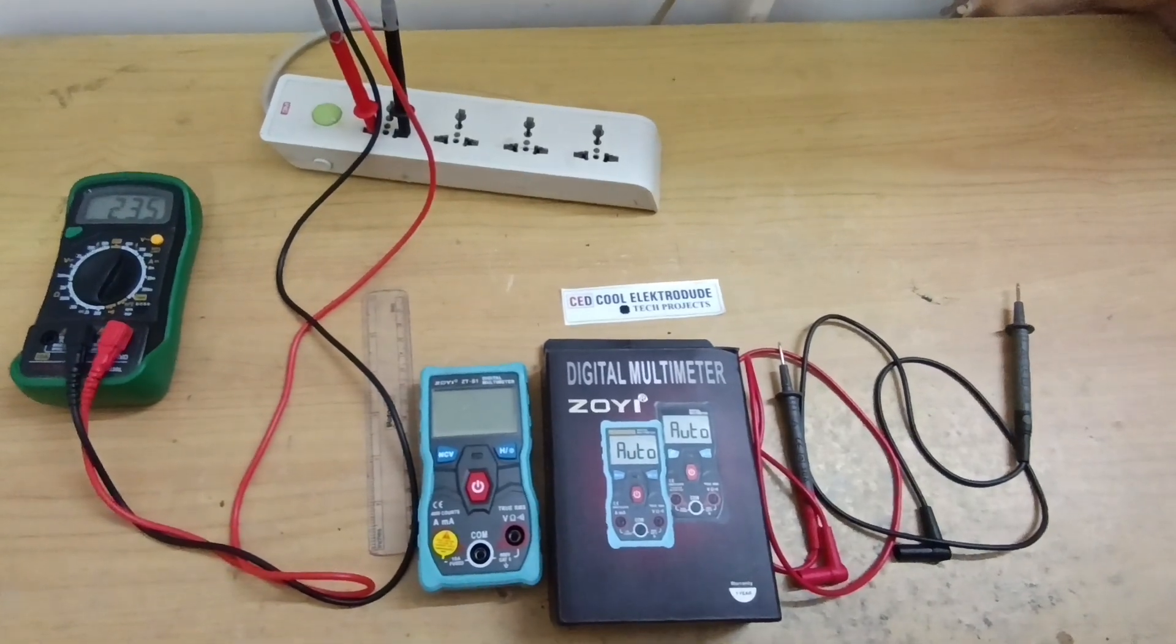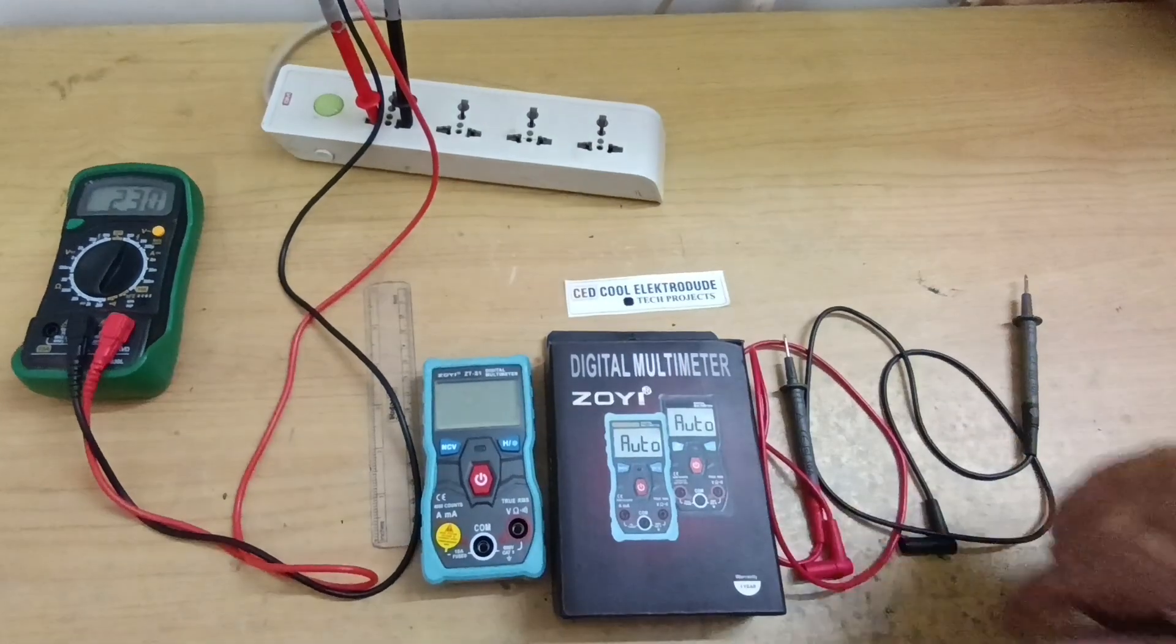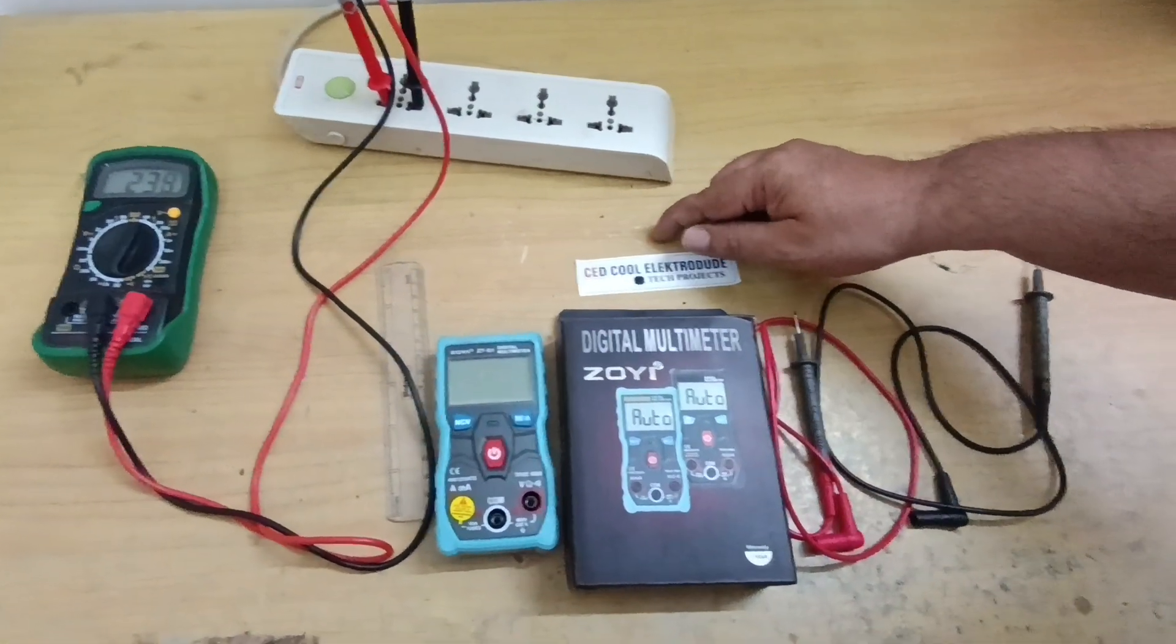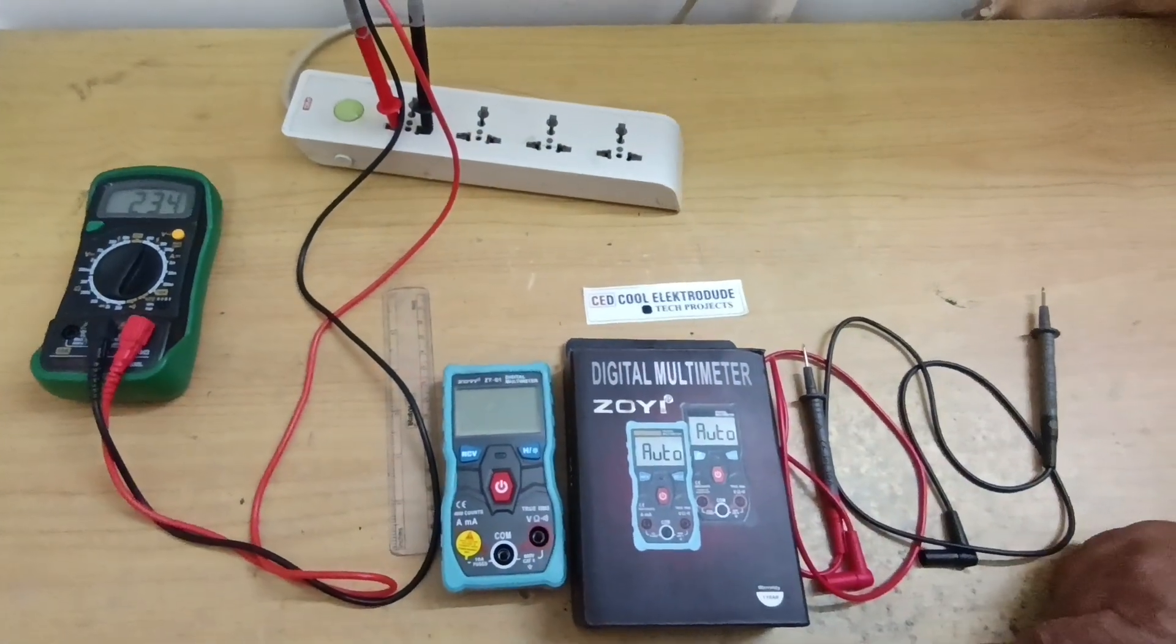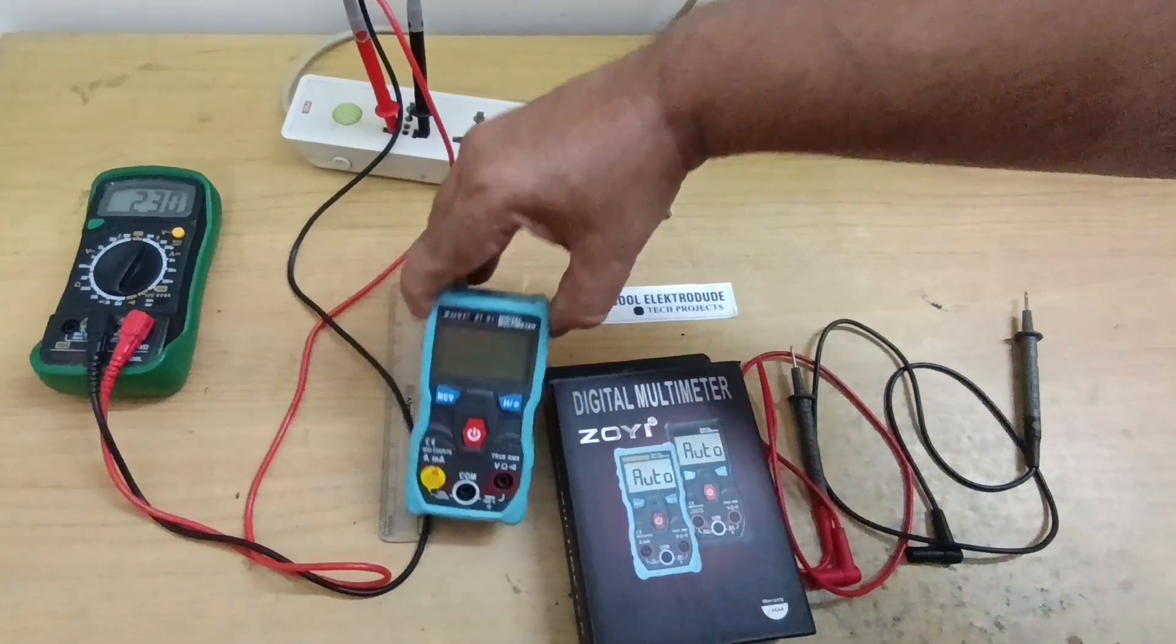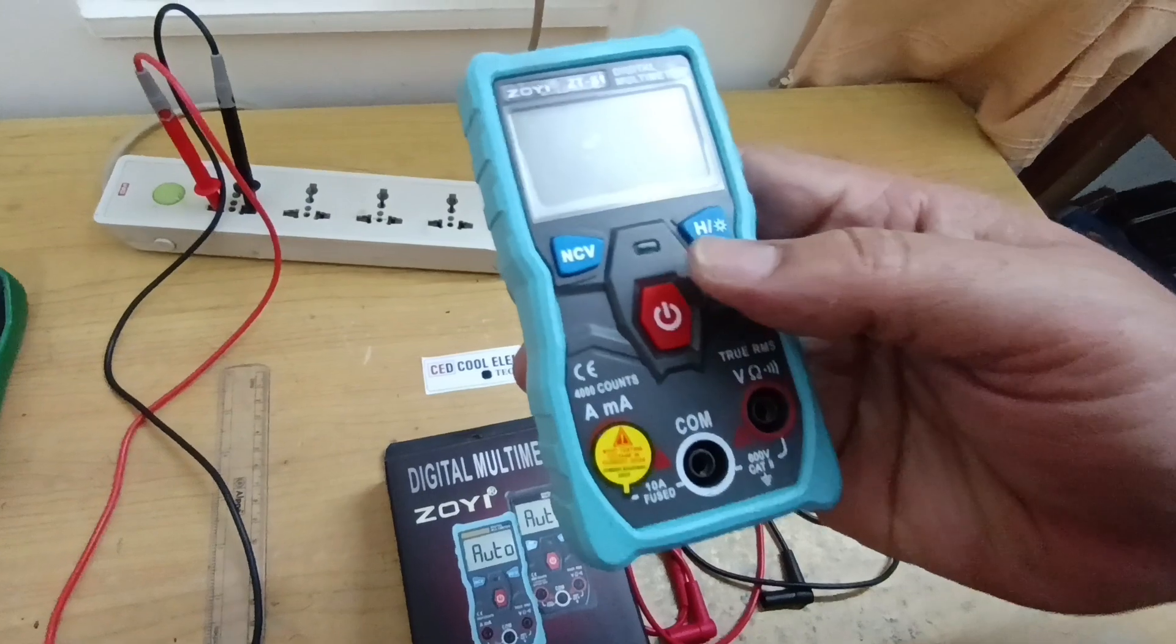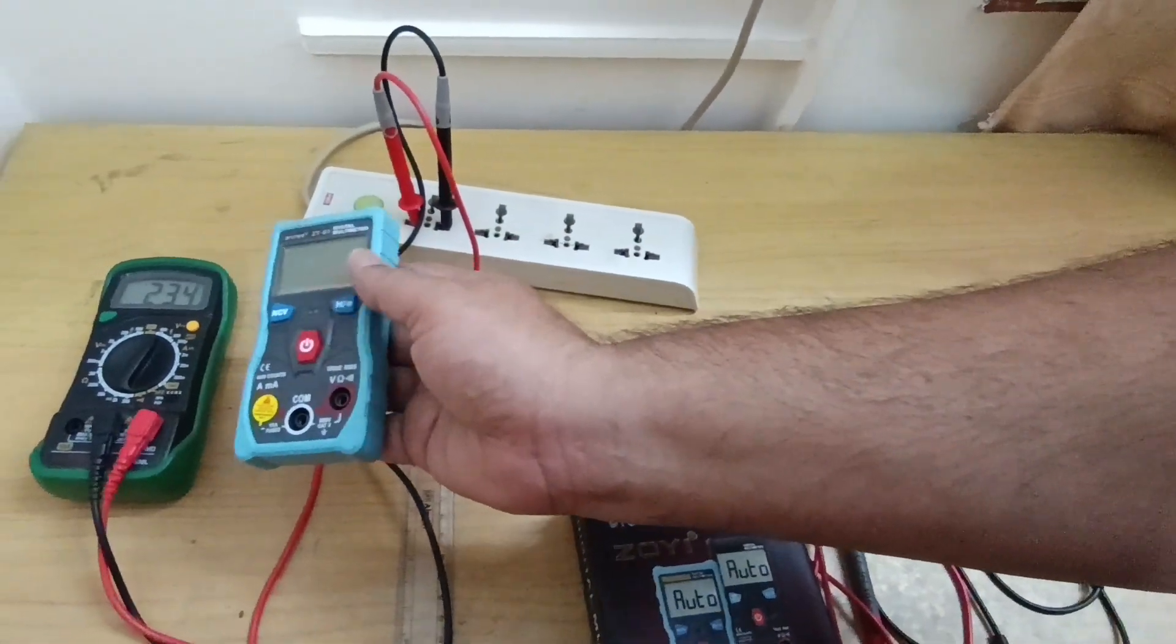Hello everyone, in today's demo I'm going to demo the new digital multimeter from Zoyi, the ZTS1 digital multimeter, which is an auto-ranging true RMS multimeter. This multimeter is a true RMS meter with auto-ranging functionality, so unlike conventional multimeters, we don't have rotary selection for voltages, resistance, and current—it's all automatic.